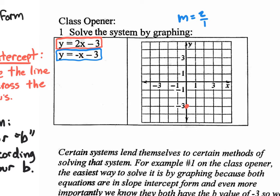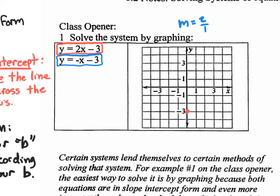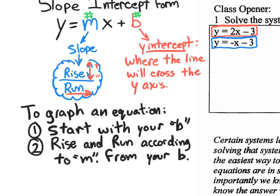Because the slope is positive 2 over 1, I'm going to go up 2 units from the b-value point, then over 1 to the right, and put a dot there. That gives me my line — I draw a line right through those points. Let's extend it by continuing the pattern of up 2, over 1. You always run to the right, never to the left.